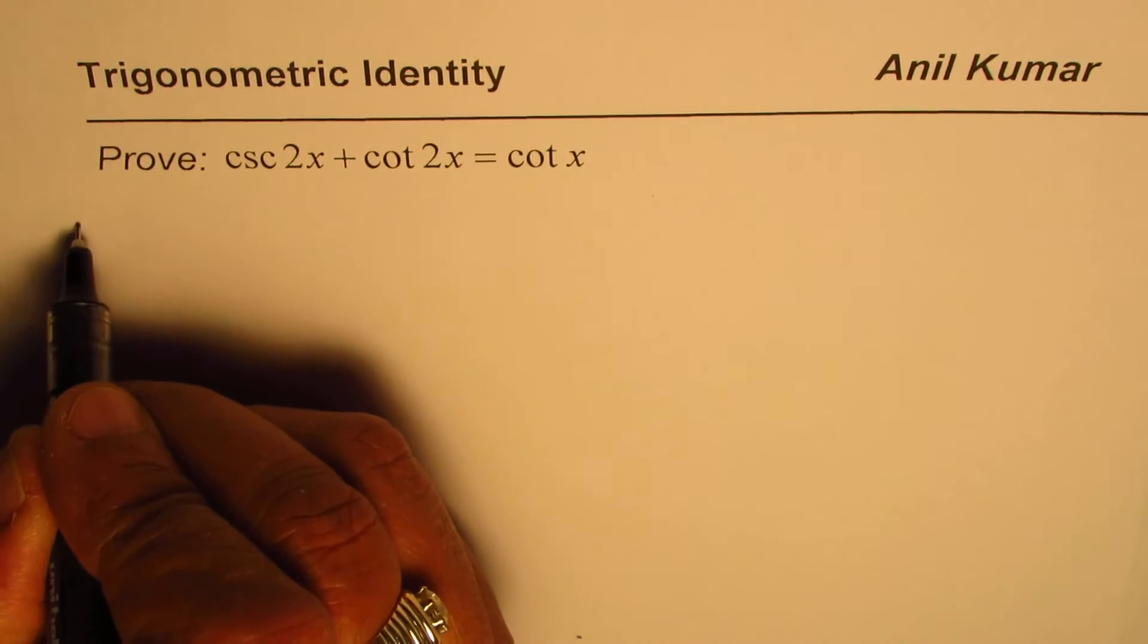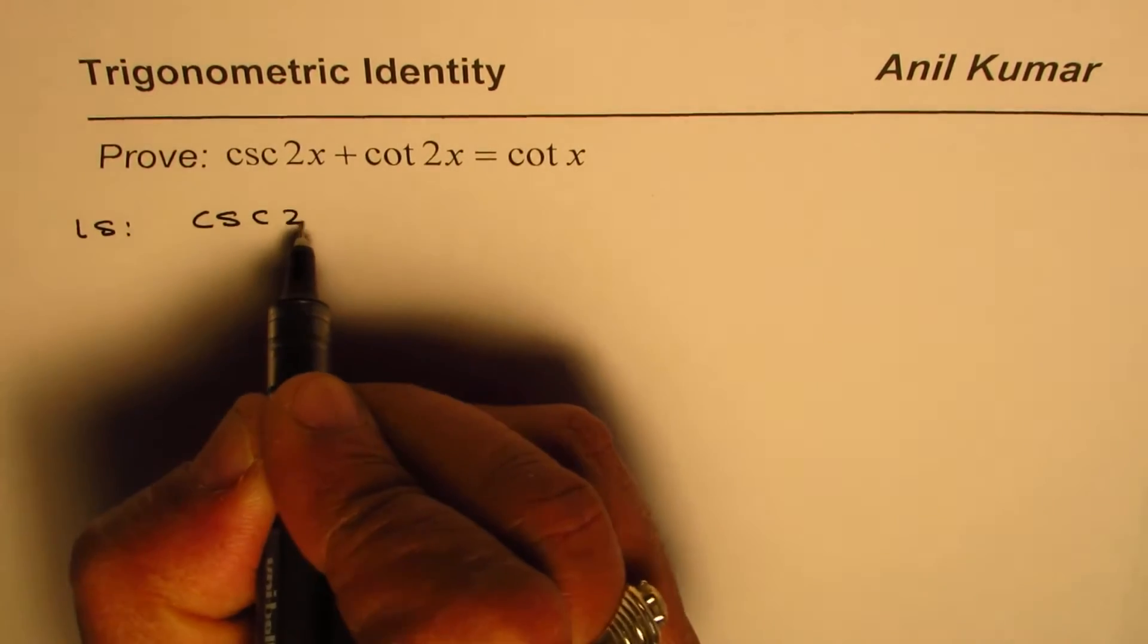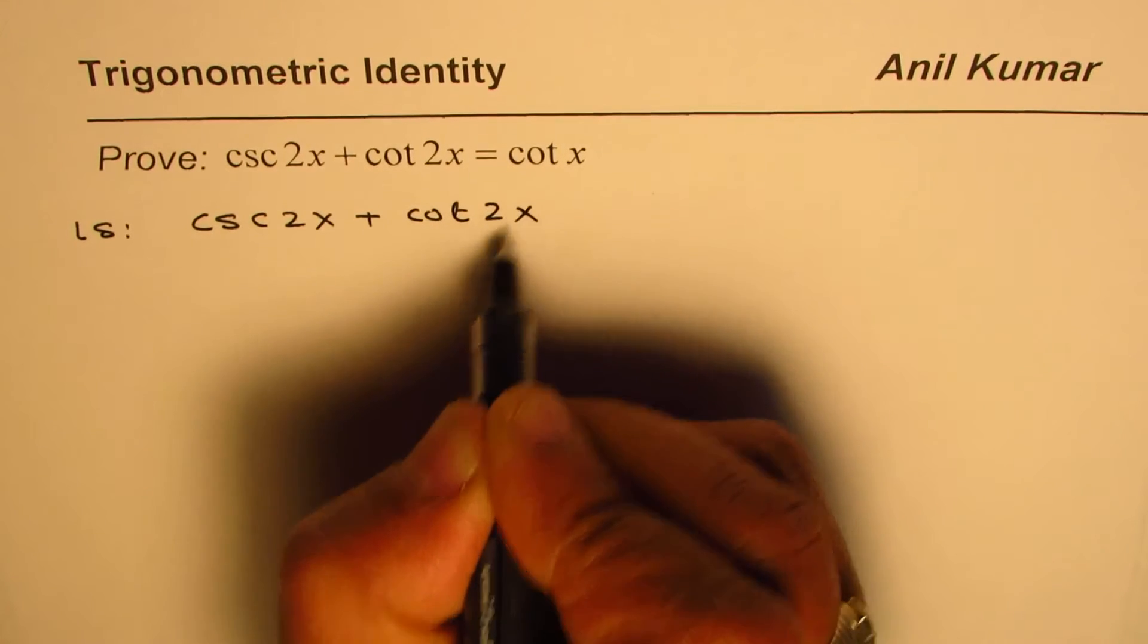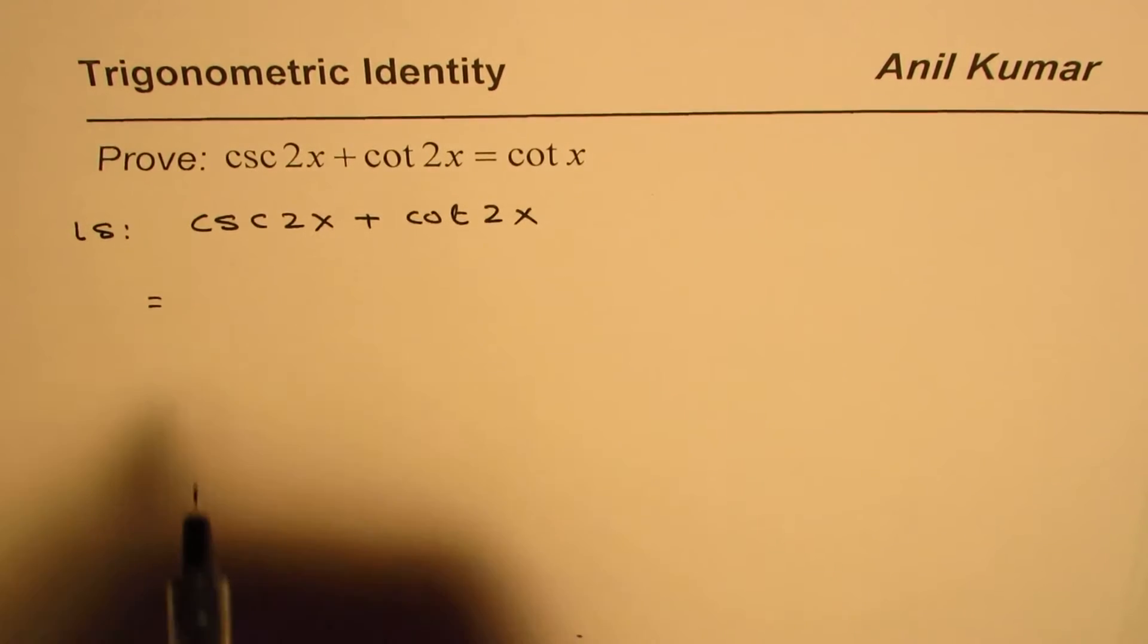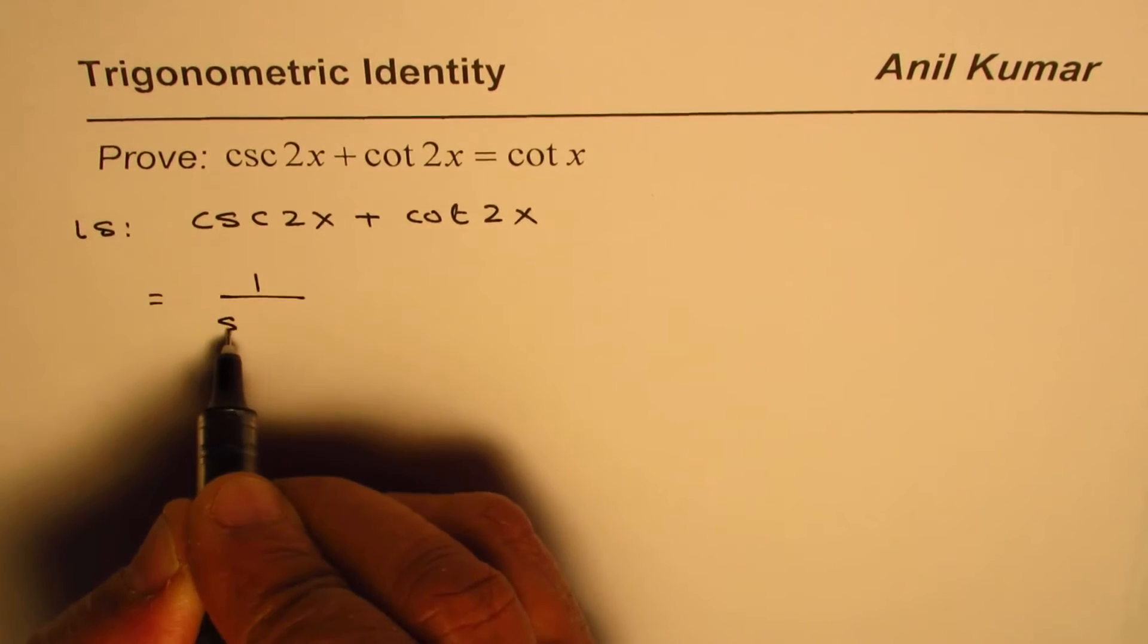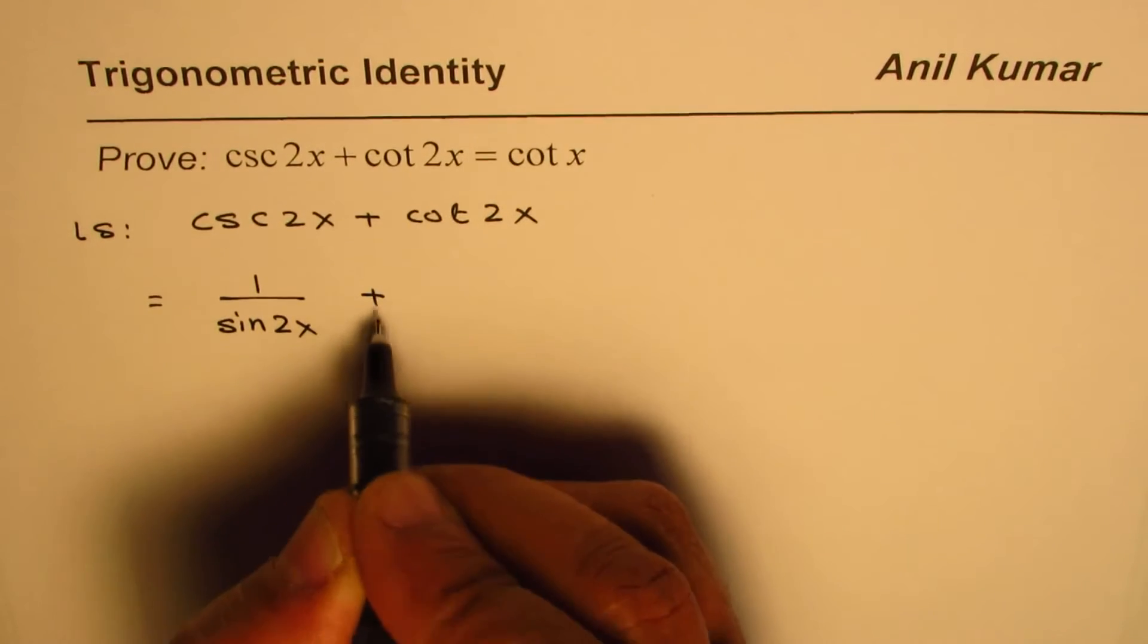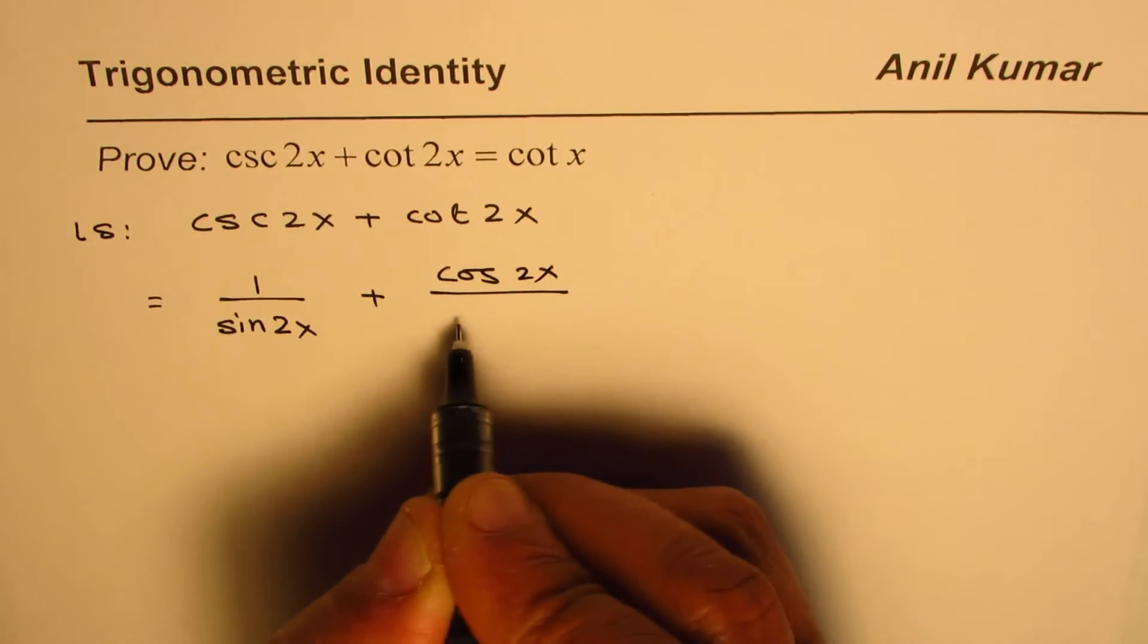Let us begin from the left side, which is cosecant 2x plus cotangent 2x. That's a good idea to write them in terms of sine and cosine. Cosecant is 1 over sine, so we'll write this as 1 over sine 2x, and cotangent 2x is cosine 2x over sine 2x.